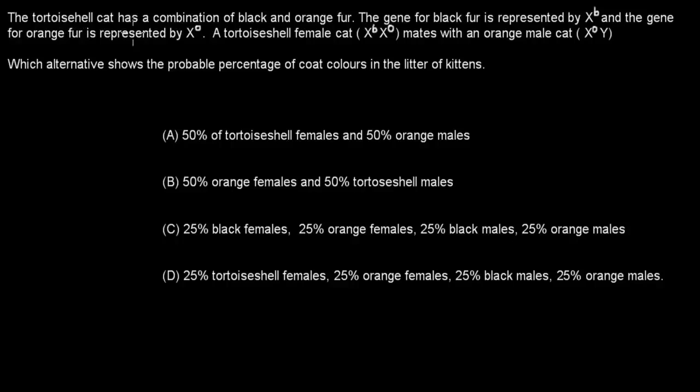Next question. The tortoiseshell cat has a combination of black and orange fur. The gene for black fur is represented by XB capital B, and the gene for orange fur is represented by X and O. A tortoiseshell female cat, XBXO, mates with an orange male cat, XOY. Which alternative shows the probable percentage of coat colors in their litter of kittens? A. 50% of tortoiseshell females and 50% of orange males. B. 50% of orange females and 50% of tortoiseshell males. C. 25% male, 25% orange females, 25% black males, 25% orange males. Or D. 25% tortoiseshells, 25% orange females, 25% black males, 25% orange males. So when you're ready, pause the video and attempt the question.